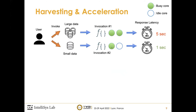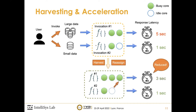Each invocation has a unique resource consumption and a unique resource demand, and there is a gap between the static resource limit and the actual resource consumption. We propose to harvest idle resources from over-allocated function invocations to accelerate under-allocated functions. For example, we harvest one core from function invocation two and reassign it to accelerate function invocation one, leading to a two-second reduction in end-to-end function response latency.